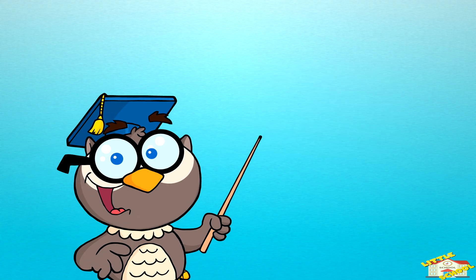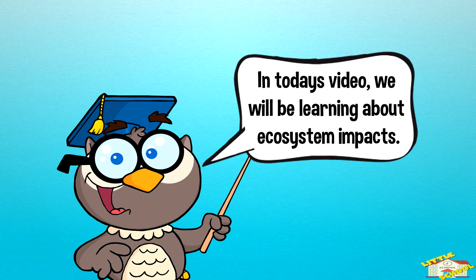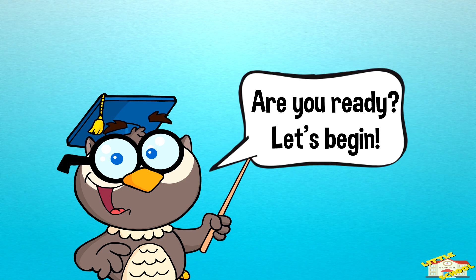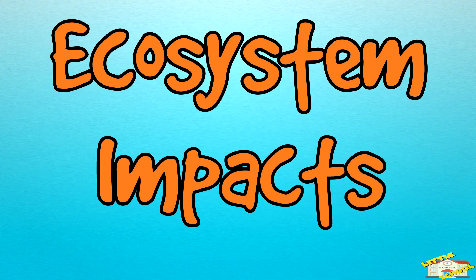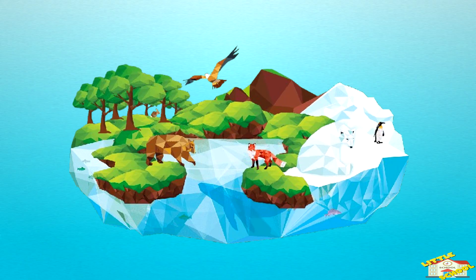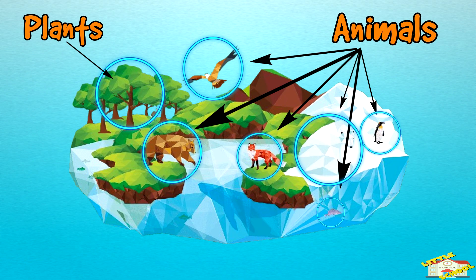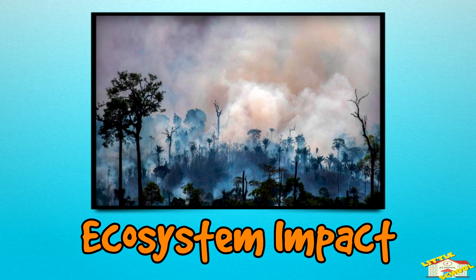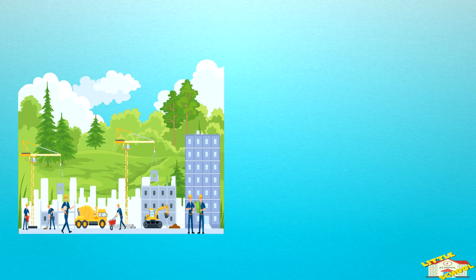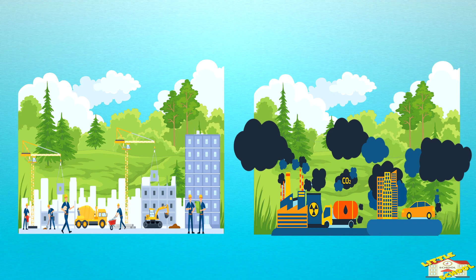Hey kids, in today's video we'll be learning about ecosystem impacts. Are you ready? Let's begin. An ecosystem is like a big community where plants, animals, water, and soil all work together to keep everything balanced. But when something changes in this community, it can affect everything else. That's called ecosystem impact — it's how changes like pollution or building new things can affect the plants and animals living there.